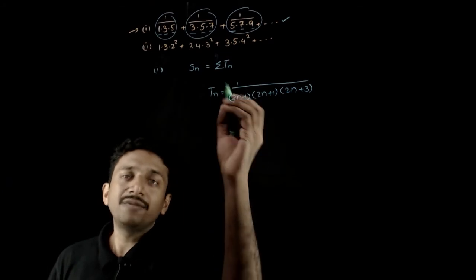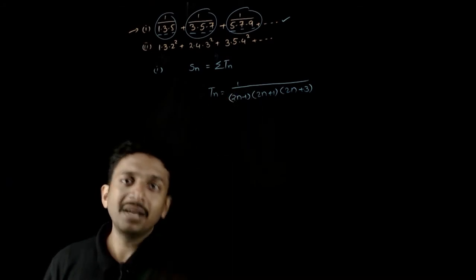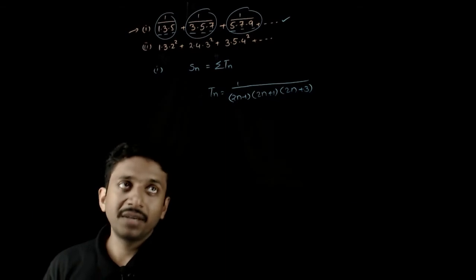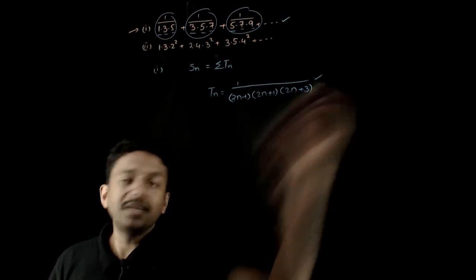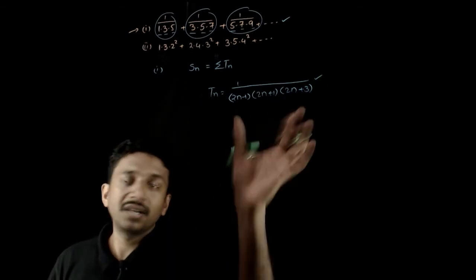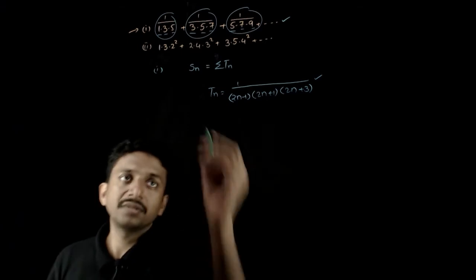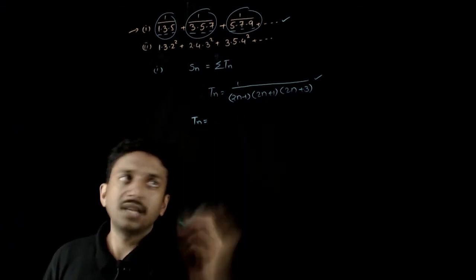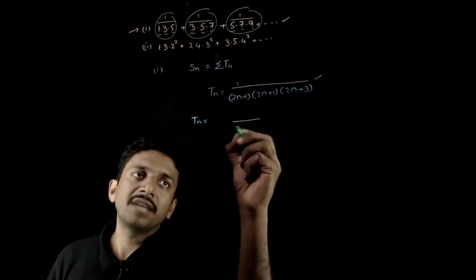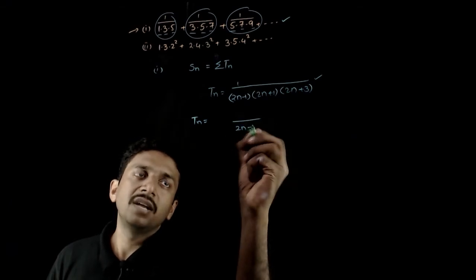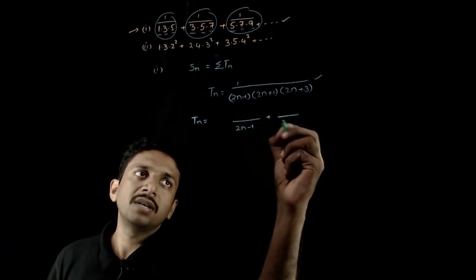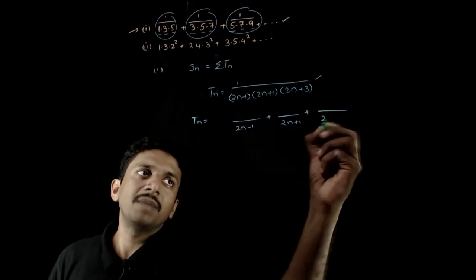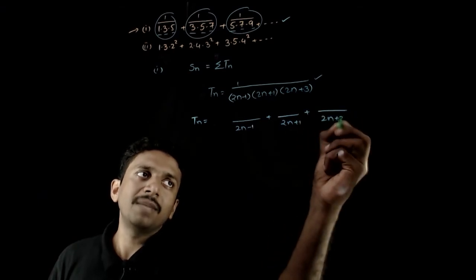Now I just need to find sigma Tn. Before finding sigma Tn, I will split this Tn into partial fractions. So Tn = A/(2n−1) + B/(2n+1) + C/(2n+3).